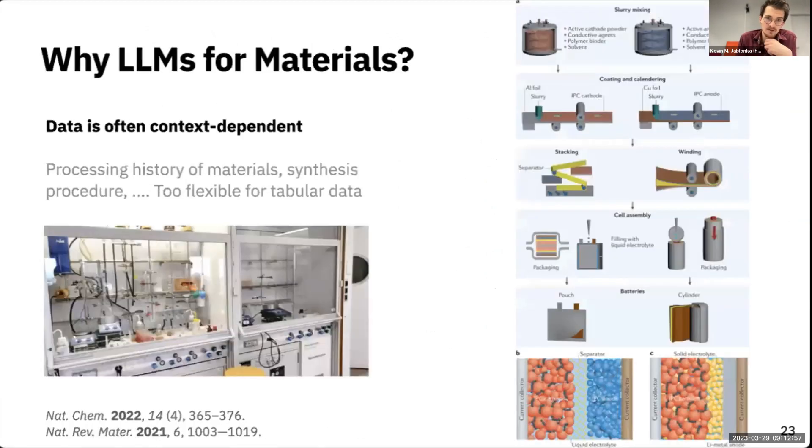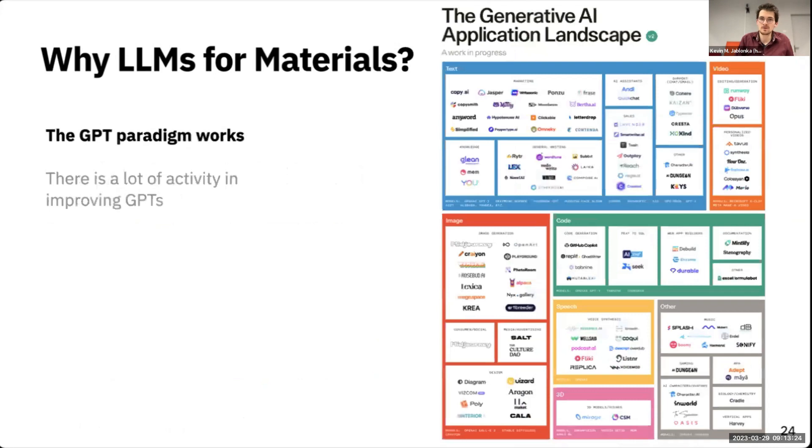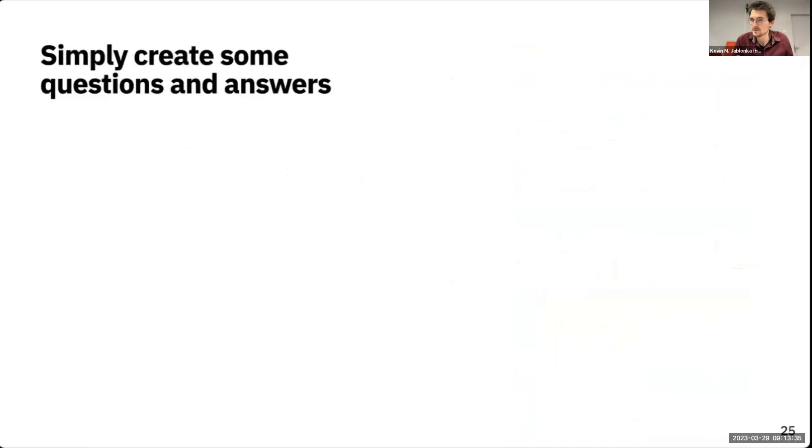This is quite fascinating, also given that we can introduce much more context in our learning. In chemistry and material science, the way you make stuff, how you process your polymer is quite important for the properties in the end. Putting this into tables is quite hard because it's so flexible. Having a text interface might be the most promising route to address those things. And then of course, we also have the recent growth for LLMs all over the place.